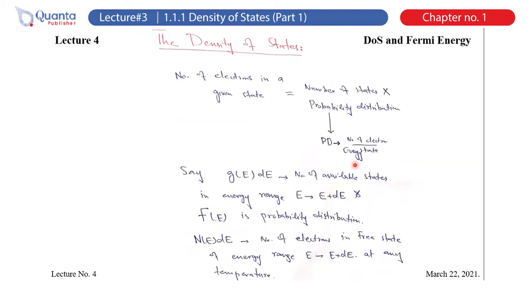Welcome to the lecture on density of states and Fermi energy. Previously we looked at a three-dimensional potential well where energy is calculated as G(E), and we talked about the formula of distribution. We also calculated the Fermi energy, keeping in mind that in the potential well the quantum numbers nx, ny, and nz are positive numbers. Today we will look at density of states in depth.